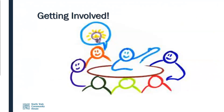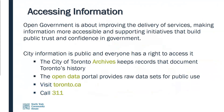Of the three levels of government in Canada, the municipal level is the easiest one to participate in because it's so accessible — council, committees, staff, and councillors are all within reach. Open government is about improving the delivery of services, making information more accessible, and supporting initiatives that build public trust and confidence in governments. City information is very much public and everyone has a right to access it. The City of Toronto Archives keep records documenting Toronto's history, the open data portal provides raw data sets for public use, and you can visit toronto.ca or call 311 for more information.